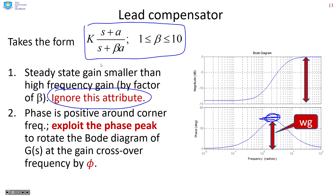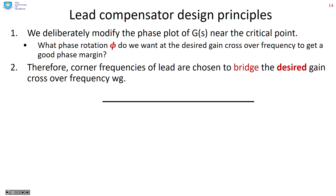This large positive phase is useful because it allows us to increase the phase margin by rotating in the correct direction. We're going to exploit that phase characteristic, and we want the maximum phase to correspond with the crossover frequency, so we get the maximum phase rotation where we're calculating the phase margin.